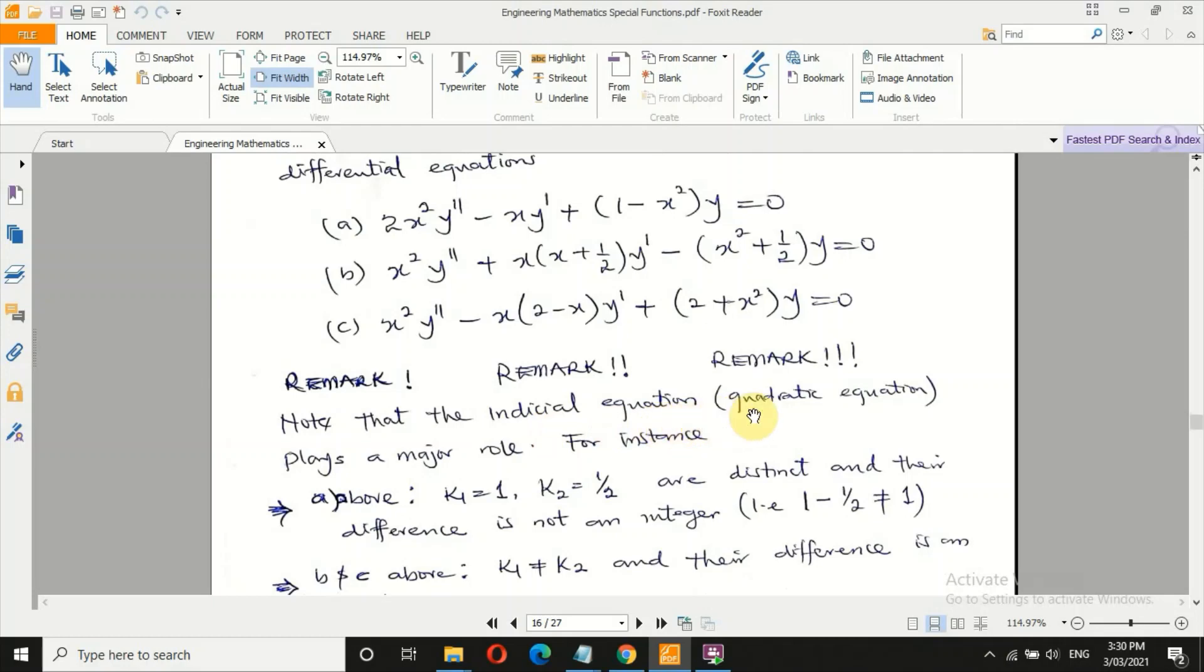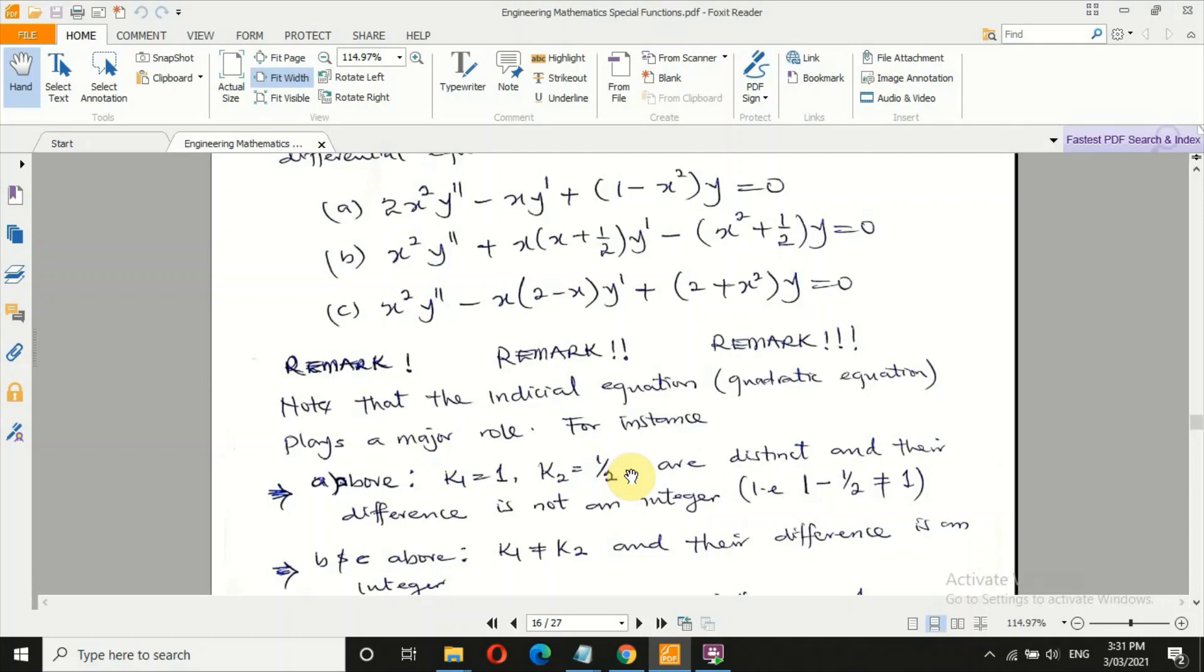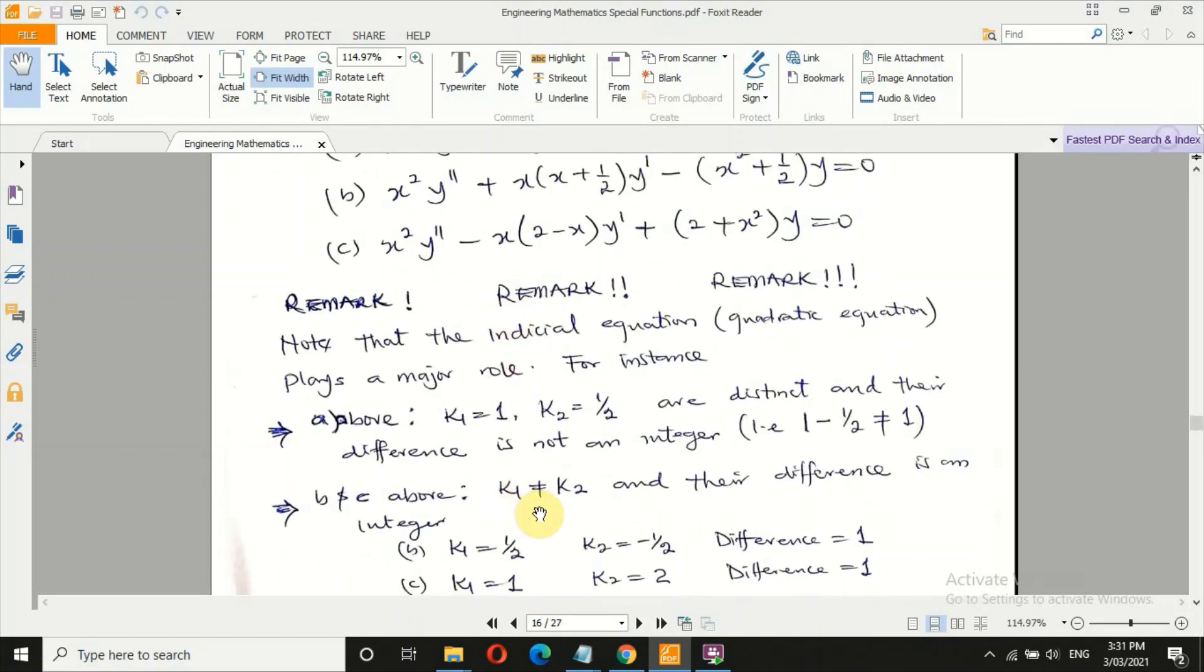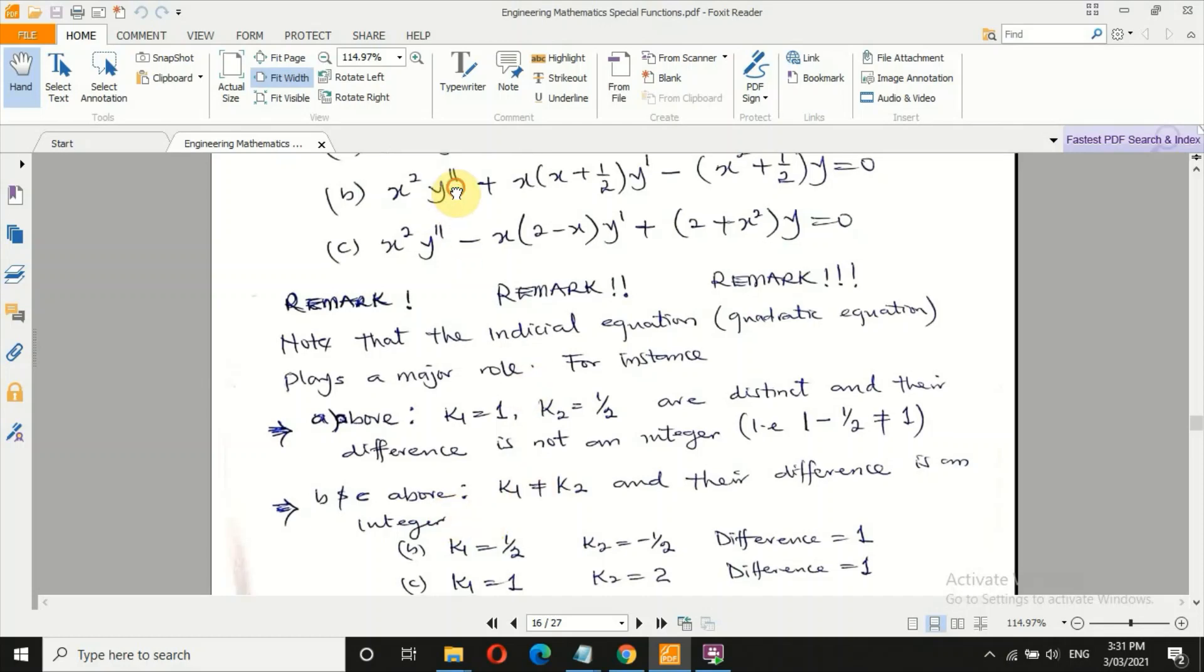Note that the indicial equation, which is like a quadratic equation, plays a major role. For instance, if you take a look at this one. You have to solve this equation. By the time you solve it, you assume y, summation 0 to infinity, ar x to the k plus r. By the time you differentiate the first and second time, you return everything back. When r is 1, when r is 0, what you get is k1 is 1, k2 is 1 over 2. They are distinct and their difference is not an integer. 1 minus half gives you half, which is not 1. Keep that fact. Now, take a look at the second one here, b and c. k1 is 0 equals k2, and their difference is an integer. In this case, by the time you do the same thing, you'll notice k1 is half and k2 is minus half. The difference is 1. Look at c2. Assume the solution, return everything back. Set when r equals 0 to obtain your integer equation. You have k1 is 1 and k2 is 2. The difference is 1. For this case, we are going to have two different solutions. For the next one, we have one solution. For this case, k1 equals k2.